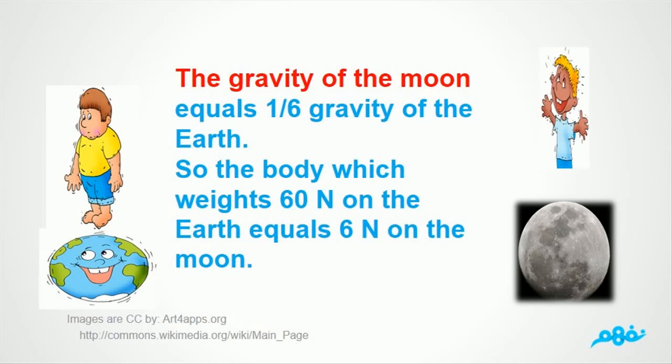The gravity of the moon equals one-sixth gravity of the earth. So the body which weighs 60 N on the earth equals 6 N on the moon.